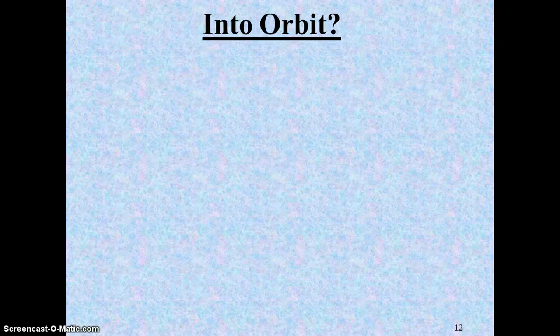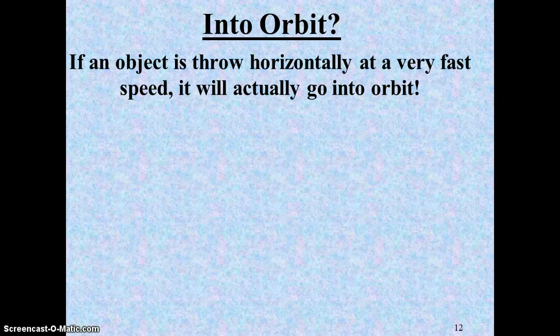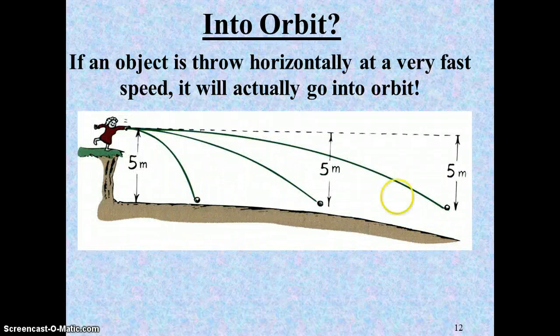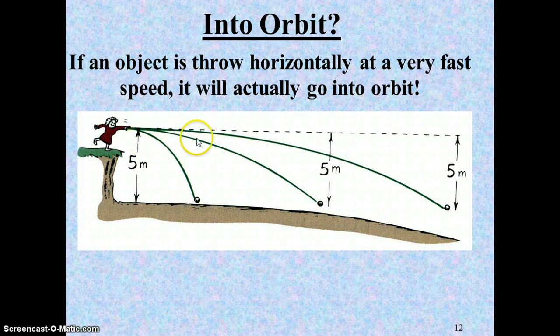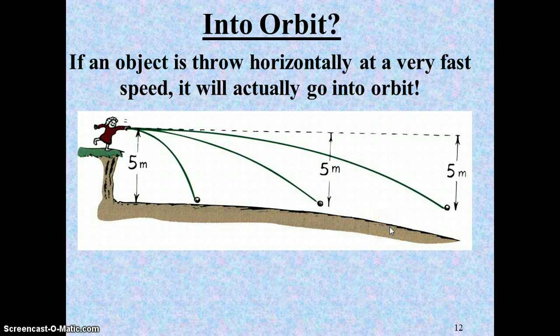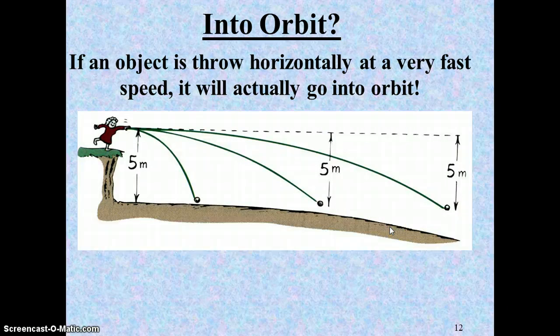Now, this leads us kind of into satellites, because if you were to take this same idea of an object launched horizontally and you fire at a certain speed, fire a little bit faster, fire a little bit faster, you'll eventually get to the point where your projectile is falling around the Earth. The Earth is curved. It is not flat. It's a big sphere. So if we launch fast enough, our projectile will fall around the Earth and never into it.